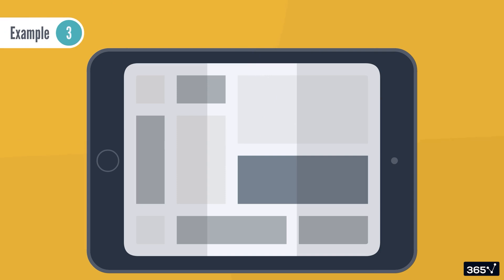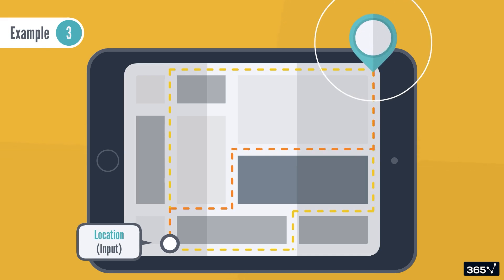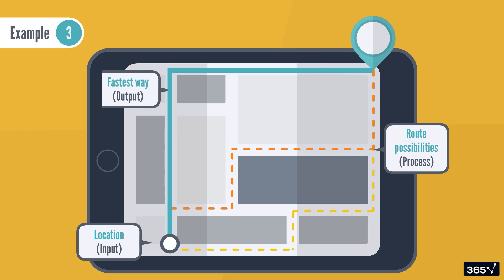Example three: Even finding the fastest route on Google Maps is an algorithm at work. It takes your location as input, processes different route possibilities, and suggests the fastest way as output.